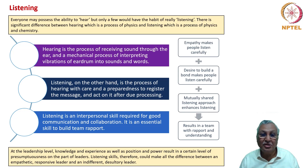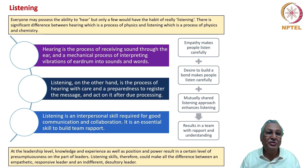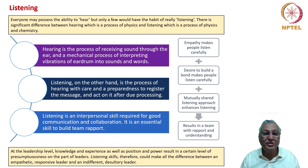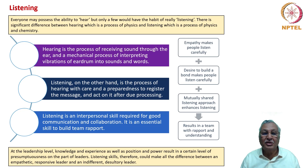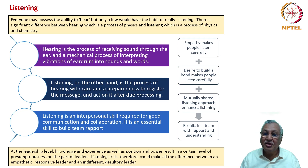The third sensory aspect is listening. Everyone may possess the ability to hear, but only a few have the habit of really listening. There is significant difference between hearing — a process of physics — and listening, which is a process of physics and chemistry. Hearing is the process of receiving sound through the ear and mechanically interpreting vibrations. Listening, on the other hand, is the process of hearing with care and a preparedness to register the message and act on it after due processing. Listening is an interpersonal skill required for good communication and collaboration. Empathy makes people listen carefully; a desire to build a bond makes people listen carefully.